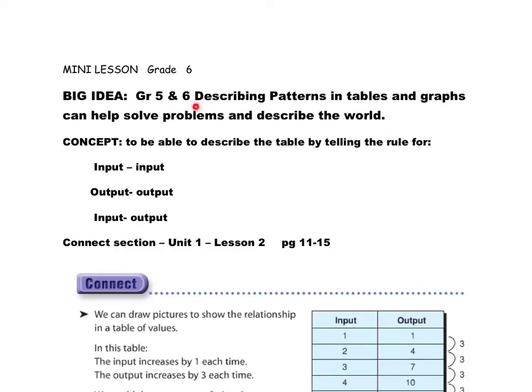Alright, grade 6. Our big idea again is to describe patterns in tables and graphs, and this can help us to solve problems and describe the world. Our concept specifically today, beginning with the end in mind, is to be able to describe the table by telling the rule for the input to the input, the output to the output, and the input to the output. We've had some practice with this, but most of the time, our rule had been given to us, our input to output rule. The difference today is that we are going to have to determine what the input to output rule is.